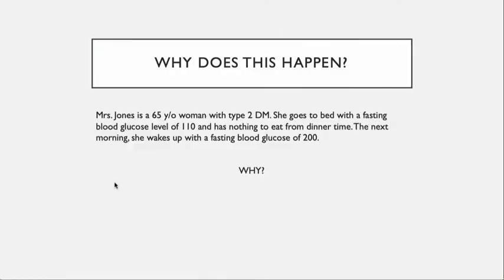Here's a scenario: a 65-year-old woman with type 2 diabetes goes to bed with a fasting glucose of 110, has nothing to eat, and wakes up in the morning with a glucose of 200. How does that happen?